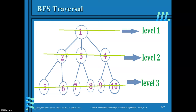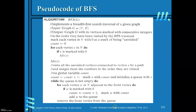For vertex 2, the adjacent vertices are 5 and 6. Now remove 2 from the queue. Now in the front, 3 is there. The adjacent vertices of 3 are 7 and 8 — push them into the queue. Since all the adjacent vertices of 3 are explored, remove 3 from the queue. Now in the front is 4. For 4, the adjacent vertices are 9 and 10 — these are pushed into the queue. Then remove 4. Finally, 5 will be in the front with no more adjacent vertices. Remove 5, then 6, 7, 8, 9, and 10 from the queue.